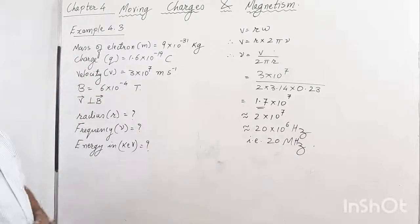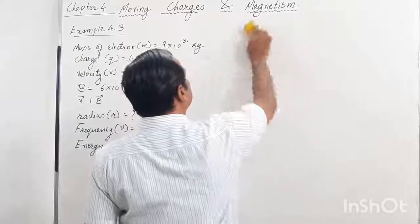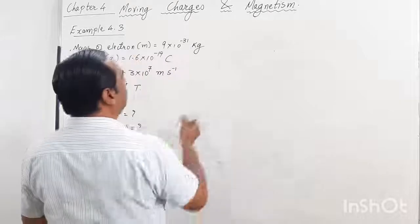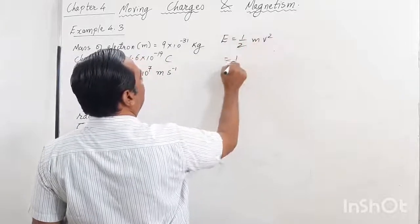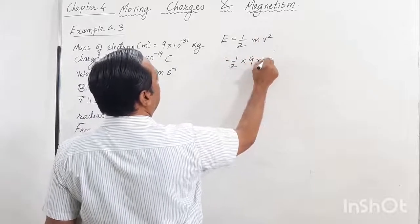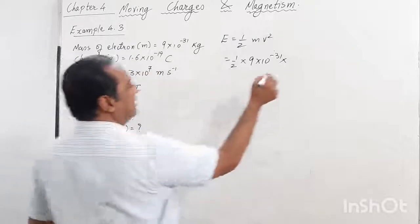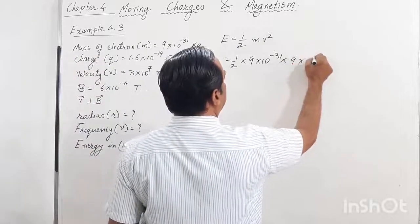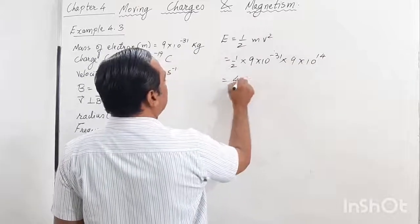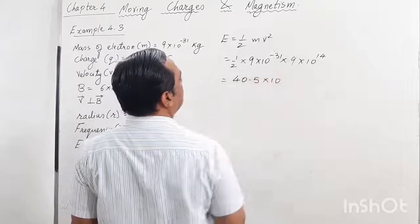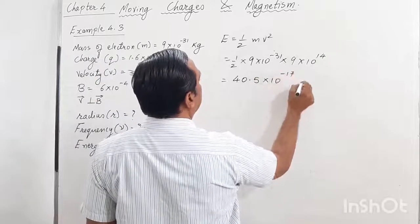Lastly, we want to find out energy in kilo electron volts. The formula for energy is E = ½mv². That's ½ × 9×10⁻³¹ × (3×10⁷)² = ½ × 9×10⁻³¹ × 9×10¹⁴. So 81 divided by 2 is 40.5×10⁻¹⁷ joules.